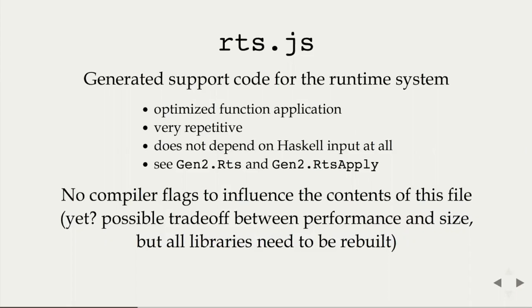There are many optimized code paths for specific sizes. After a certain point — I think around four or six arguments — they all get funneled through a single generic function that's a bit slower. So there is a trade-off between how many specialized code paths you generate, which are faster but increase file size. Unfortunately, since it requires a complete rebuild of all libraries including those built with GHCJS boot, it's currently not possible to change this easily. You can assume that rts.js really won't change for a single GHCJS installation.